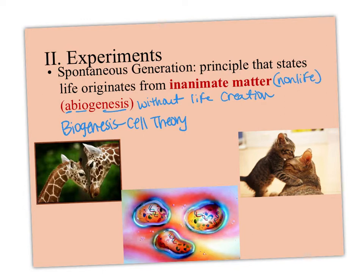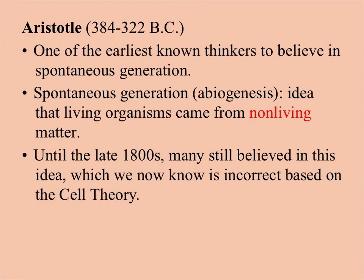Spontaneous generation directly conflicts with the cell theory, which says all cells come from pre-existing cells. So you have biogenesis — cell theory — on one side, and abiogenesis — spontaneous generation — on the other. Scientists have sought to answer the question of where life originated, partly to support Darwin's idea that all living things came from a common ancestor.